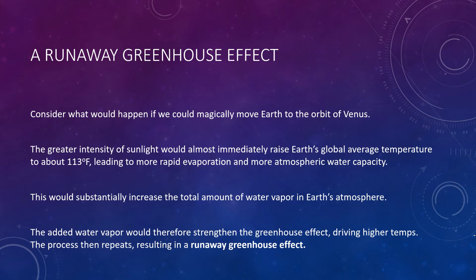With the idea of feedback in mind, let's consider what would happen if we could magically move Earth to the orbit of Venus. The greater intensity of sunlight would almost immediately raise Earth's global temperature by about 30 degrees Celsius — from its current 15 degrees Celsius to 45 degrees Celsius, or 113 degrees Fahrenheit. Although this is still well below the boiling point of water, the high temperature would lead to increased rates of evaporation from our oceans, and the higher temperatures would also allow the atmosphere to hold more water vapor.